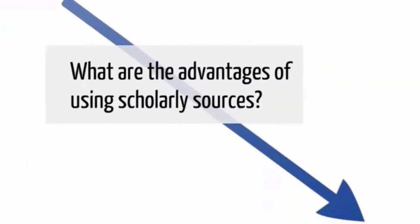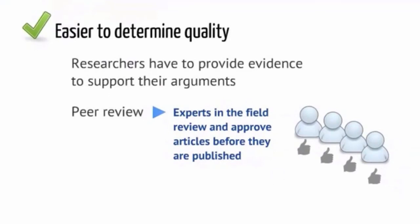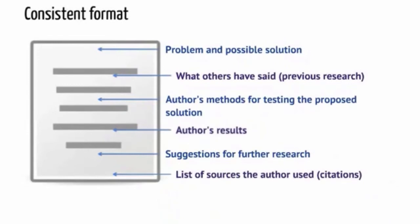What are the advantages of using scholarly sources? It's easier to determine quality. Researchers have to provide evidence to support their arguments. Many journals are peer reviewed, which means that experts in the field review and approve articles before they're published. Articles also tend to have a consistent format, and that format often relates to problem solving.